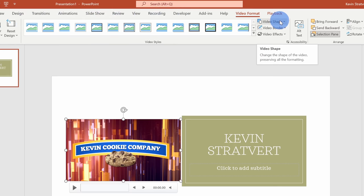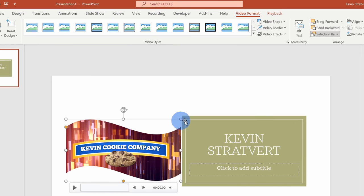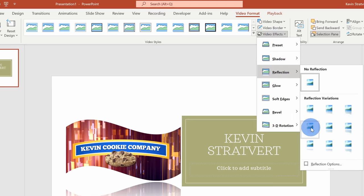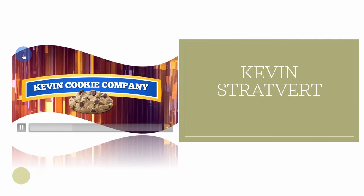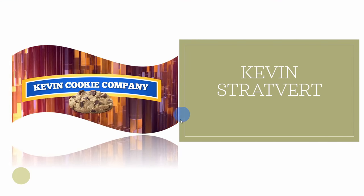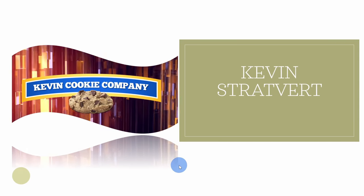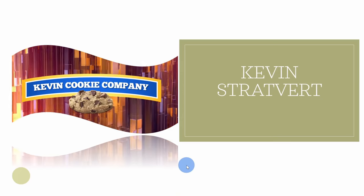Over here I could apply a video shape. When I click on this, maybe I go with this banner shape down here and that'll adjust it to a banner. Right up here I could also apply different video effects — so maybe I'll add a reflection. Let's once again jump into presentation mode. Look at that — it now applies that shape to my video and also applies a reflection. And the reflection also plays the video, so you could do some really fancy-looking things.